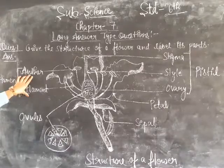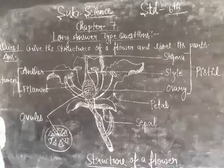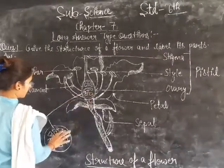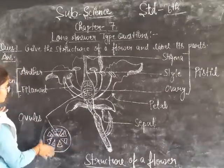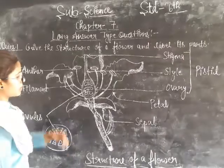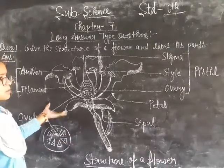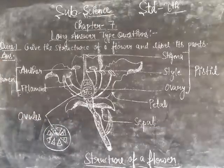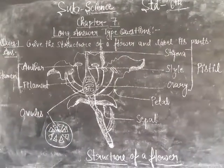And now, ovules — this one is the ovule, and these are small ovules. So this is the structure of a flower. You can make different types of structures and label the parts. Note it down and complete it. Thank you.